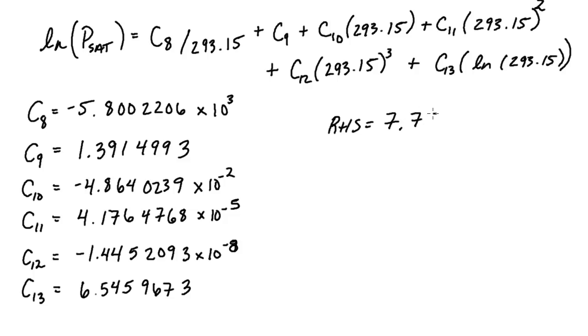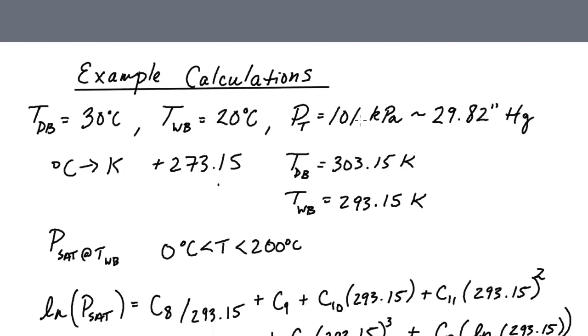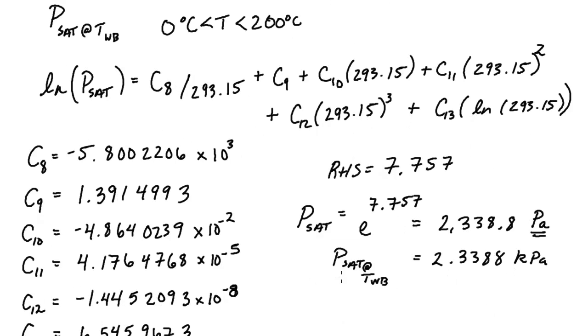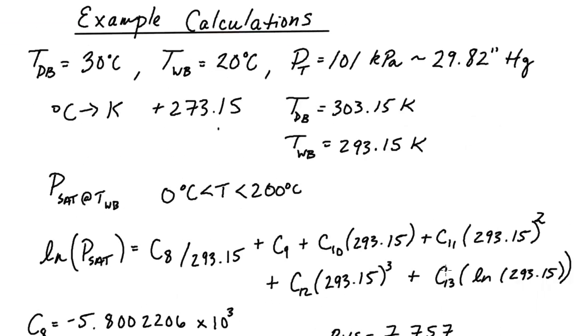If you do this calculation on the right-hand side we'll come out to something close to 7.757. This is the natural log on this side, so to get P saturation we actually have to take E to both sides. E to the 7.757 gives you 2338.8 Pascal. To get kilopascal we divide by 1,000, so we have 2.3388 kilopascal. That is our saturation pressure of H2O at the wet bulb temperature.